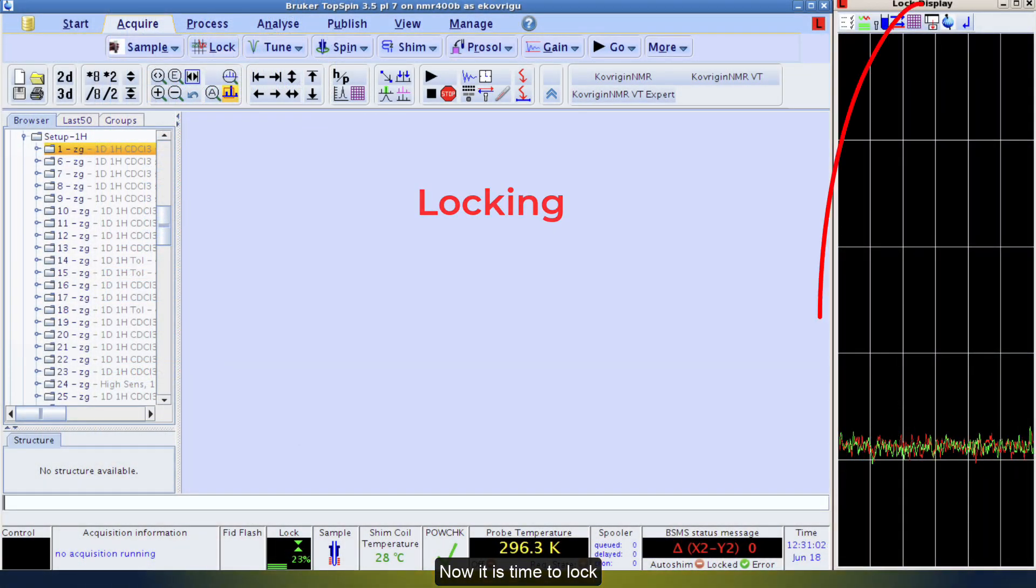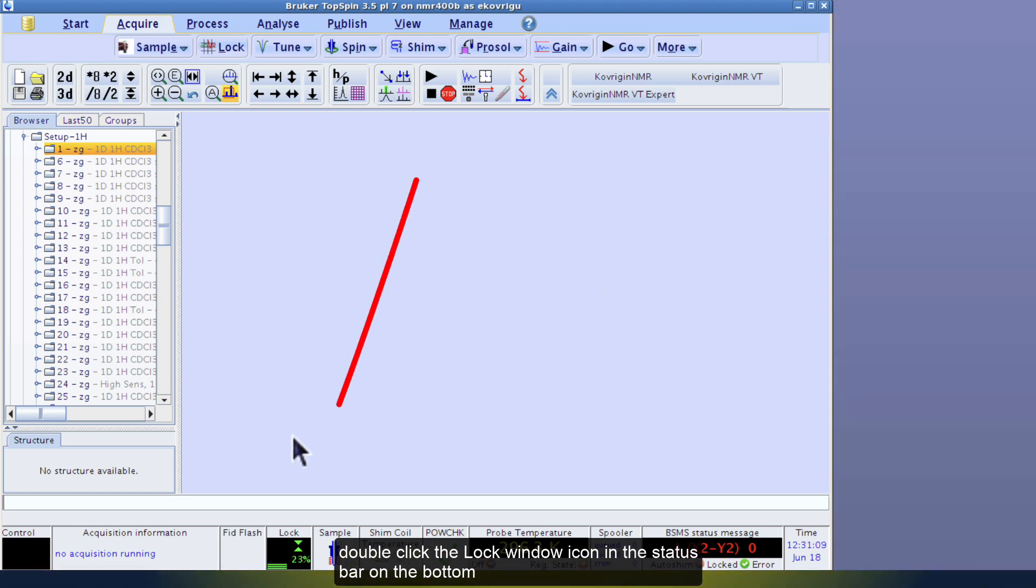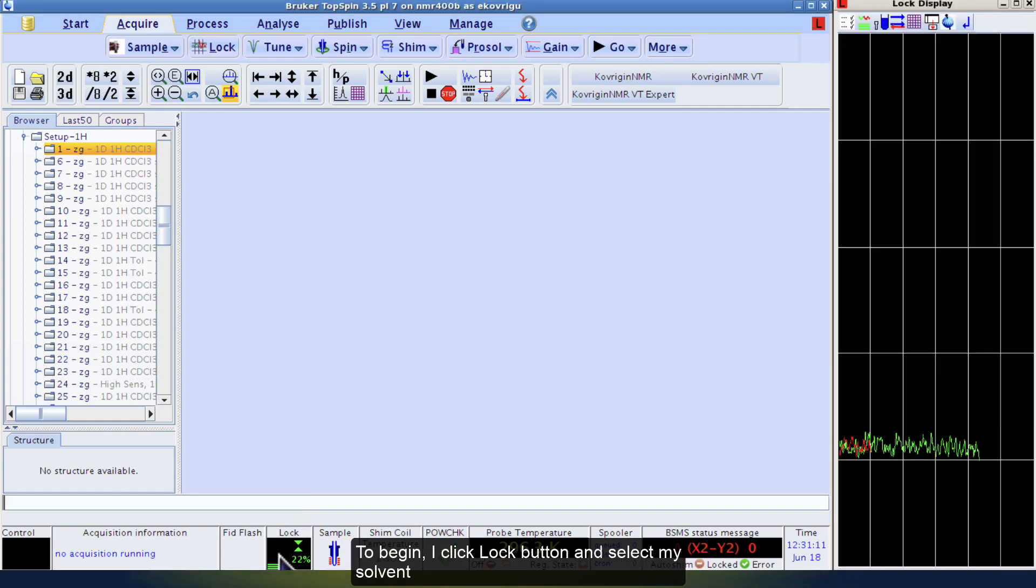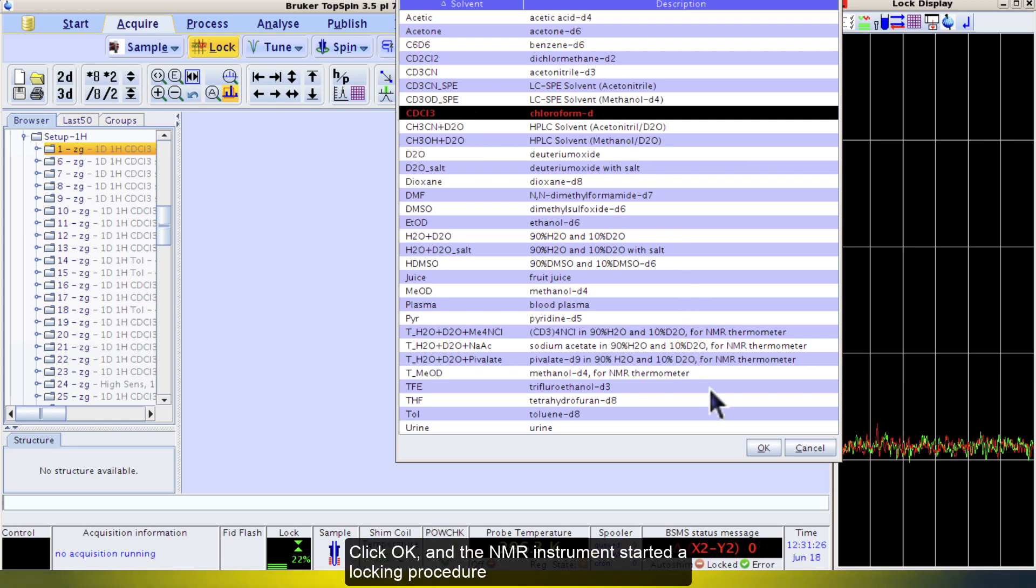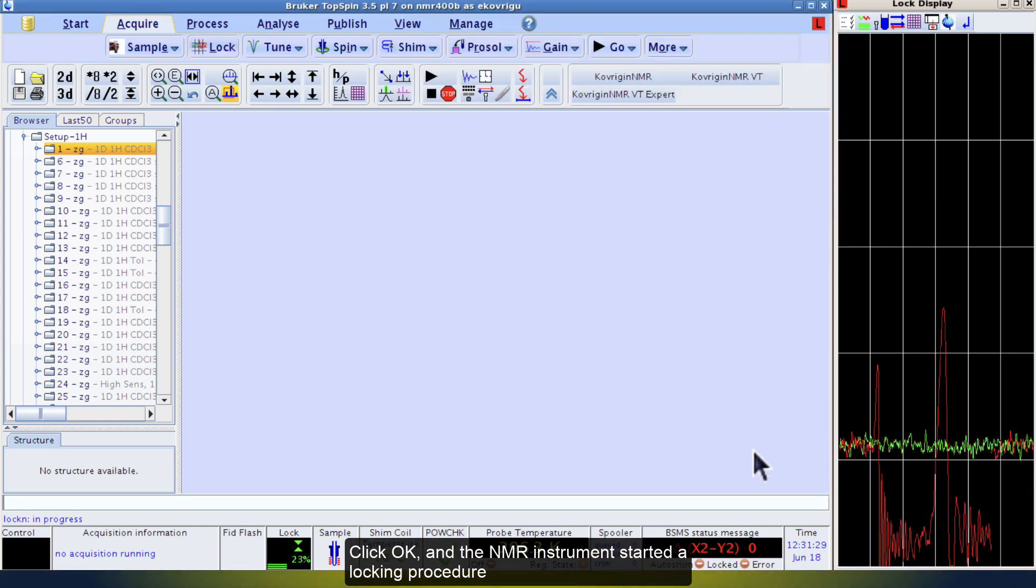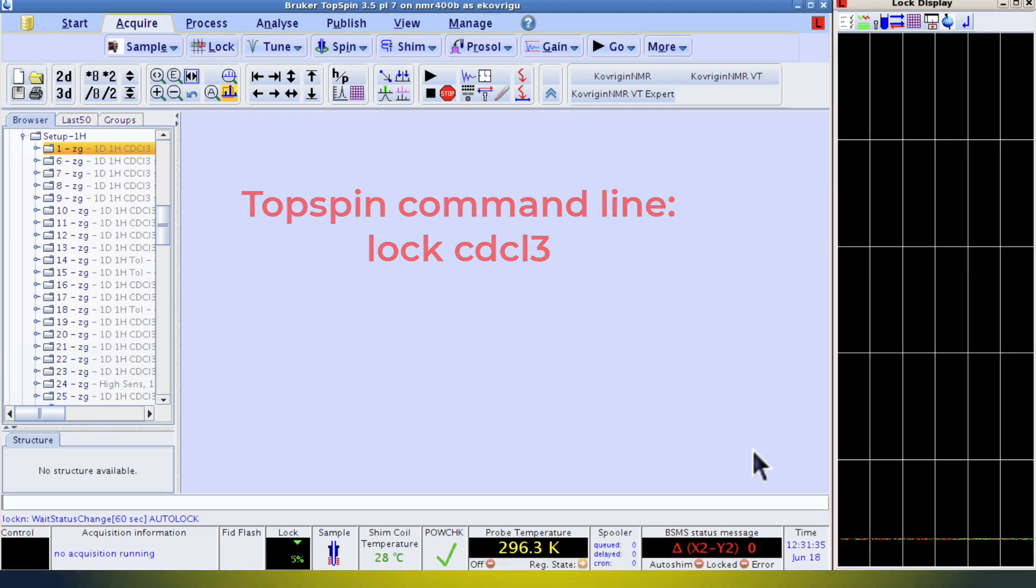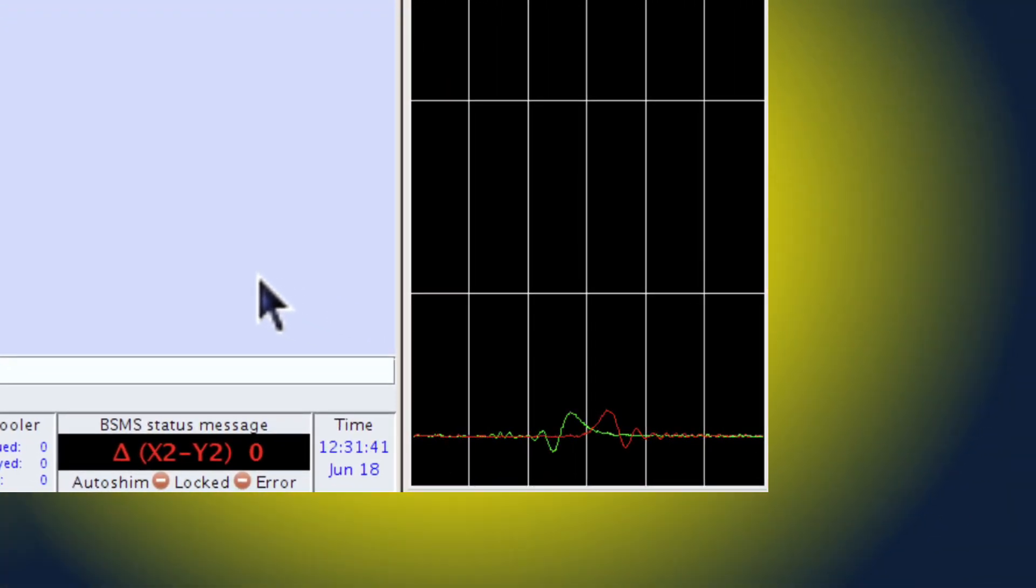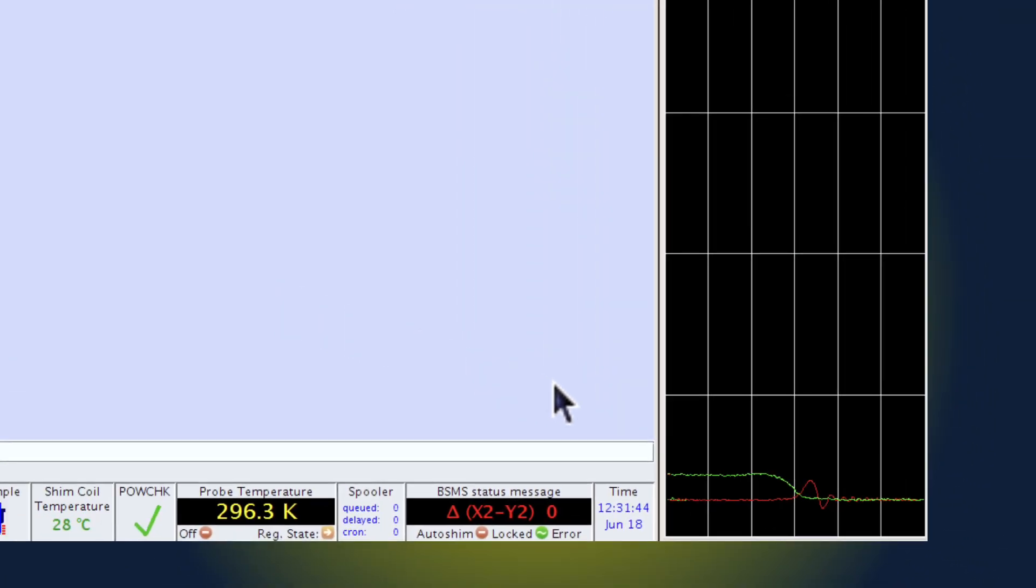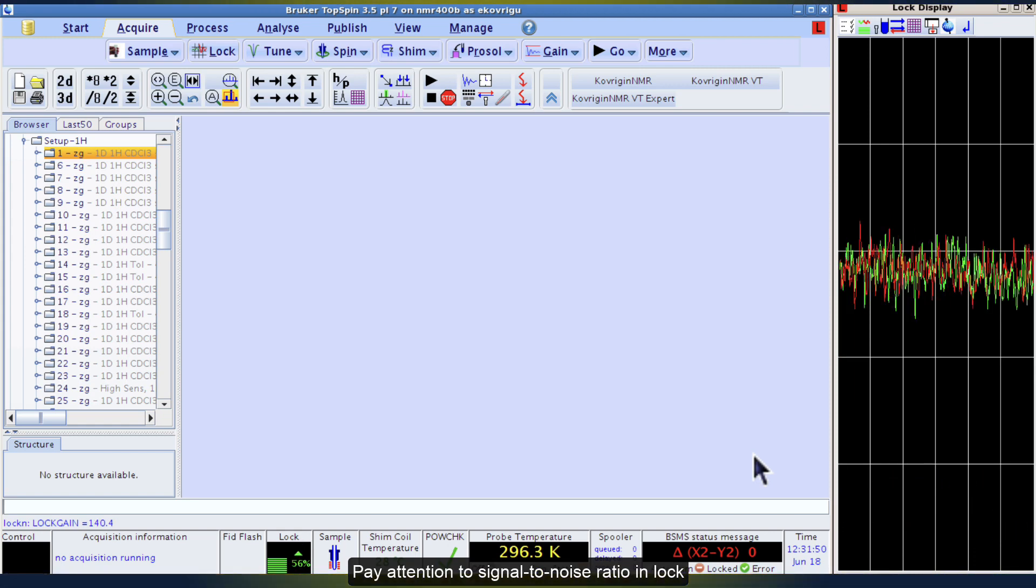Now it is time to lock. If the lock window is not shown, I will close it for demonstration. Double click the lock window icon in the status bar on the bottom. To begin, I click lock button and select my solvent. My tube is filled with deuterochloroform. Click OK and the NMR instrument started a locking procedure. A command line equivalent of these actions is lock CDCL3.